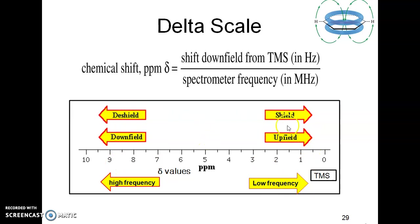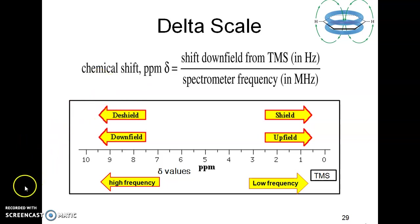Protons that come near TMS are upfield and of lower frequency, while those further away are higher frequency and downfield. What exactly shielding and deshielding means will be covered in the next video, Part 3 of NMR. Stay tuned to the Pro Pharma channel and keep watching the NMR series. Thank you for watching.